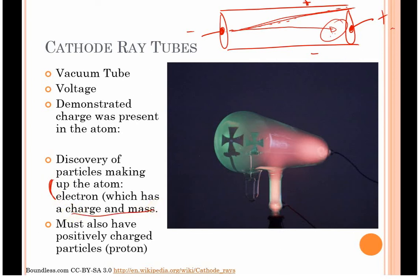This led to the discovery of the electron, which must have a mass and a charge. He also said, well, if there's something negative, there must be something there that's positive, because we don't walk around shocking ourselves all the time. But this experiment specifically led to the discovery of the electron, and the fact that it has a negative charge and some mass.